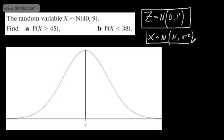So in this particular case, we can see that we have now a mean of 40, so mu would be equal to 40. And in this particular case, we're given the variance is 9. Therefore, the standard deviation, which is the square root of the variance, is going to be now 3.